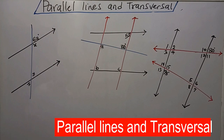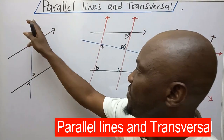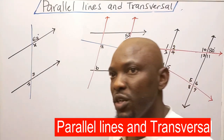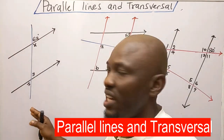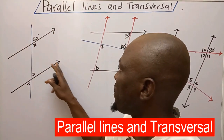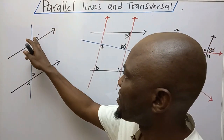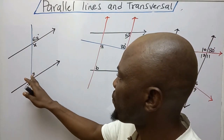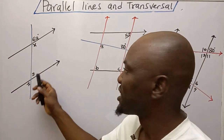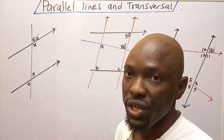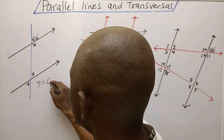We have three problems on the board. In the first problem you can see that we have parallel lines and a transversal. A transversal is a line that goes through parallel lines. At the top of the first line I have 62, at the top of the second line I have Y — that tells me that Y and 62 are both congruent, in other words they are equal.